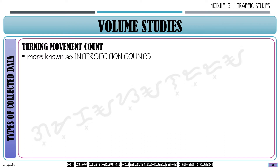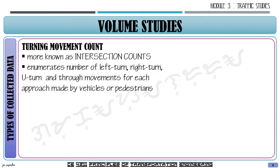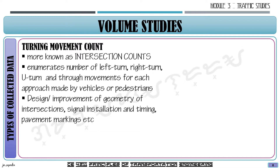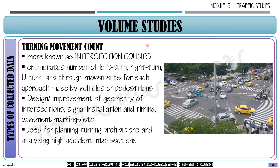Next we have turning movement counts, also known as intersection counts. This enumerates the number of left turns, right turns, U-turns, and through movements for each approach made by vehicles or pedestrians. It is used to design or improve the geometry of intersections, signal installation and timing, pavement markings, and other traffic management tools. It's also used for planning turning prohibitions and analyzing high accident rates at intersections. At an intersection, we count how many vehicles turn right, left, go straight, or make a U-turn.